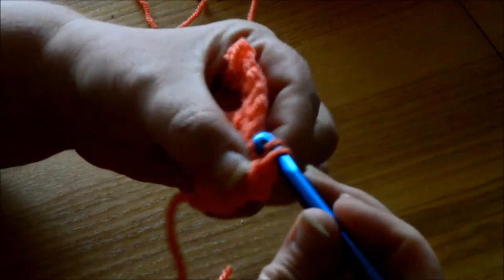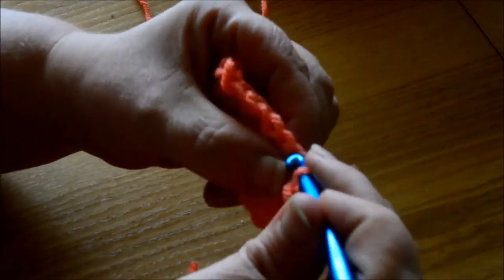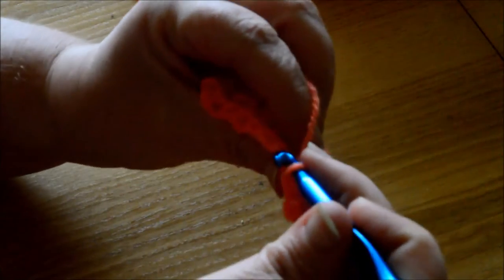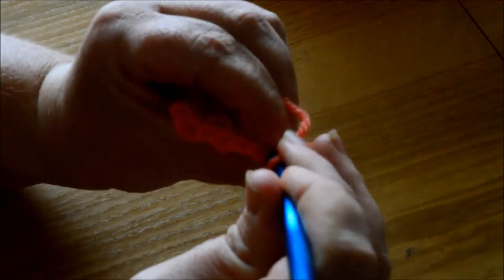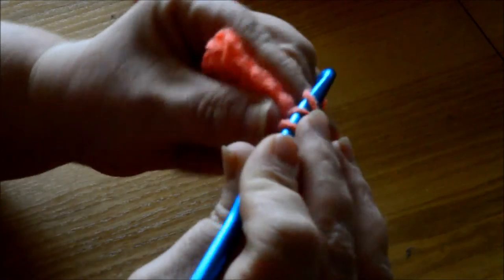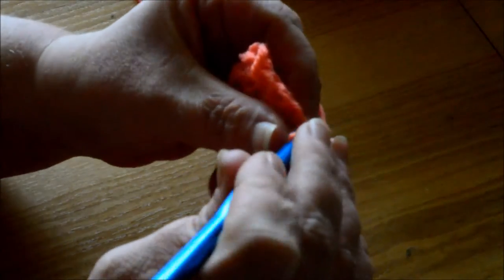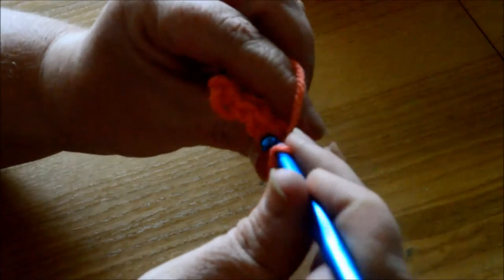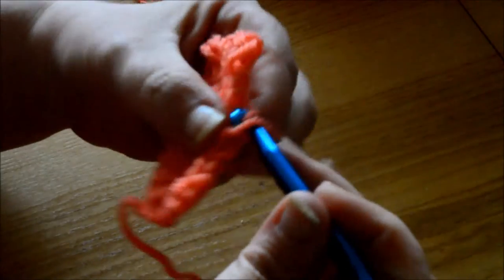You do a slip stitch in the back loop, then one in the front loop, then one in the back loop, one in the front loop again, all the way to the end. It can be a little bit tricky sometimes.